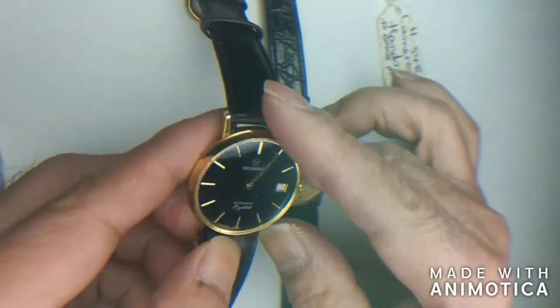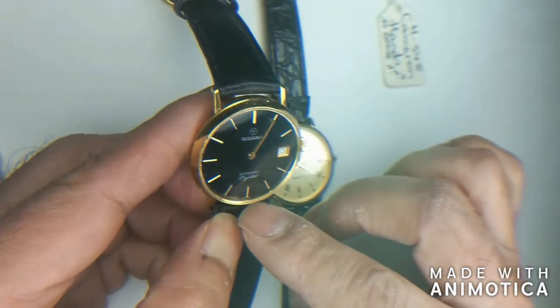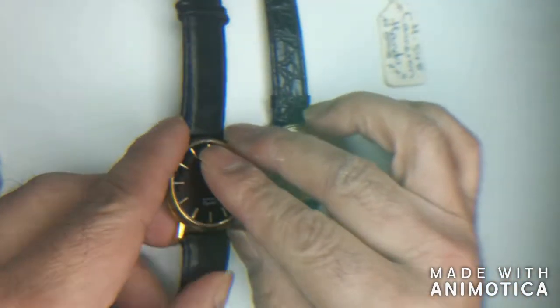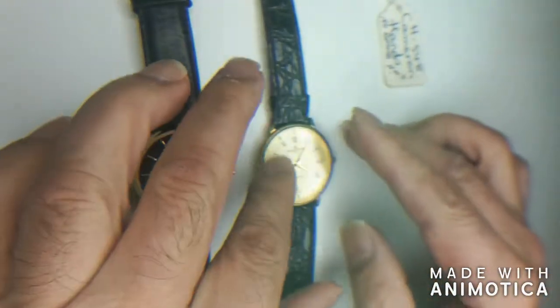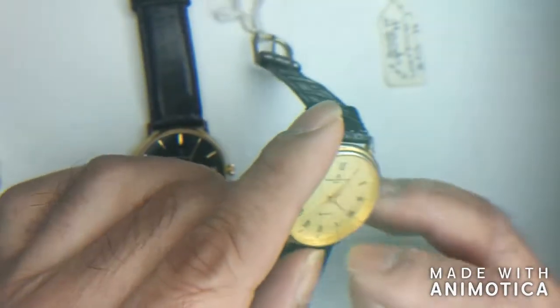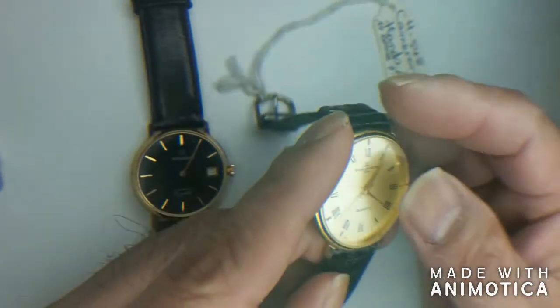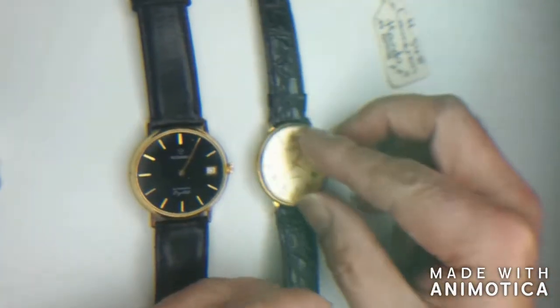And another indication that you can see is, look at the end, at the bottom here. It has 'Swiss,' alright, which is one good example. But some good replica ones will have that. On this one, there's no Swiss made here. On this one we can see there's no Swiss made here, alright, so that's a good indication.